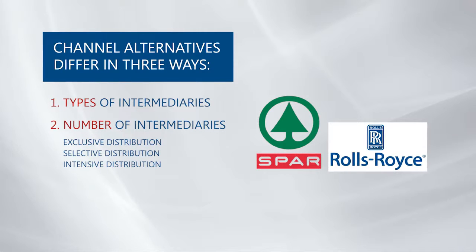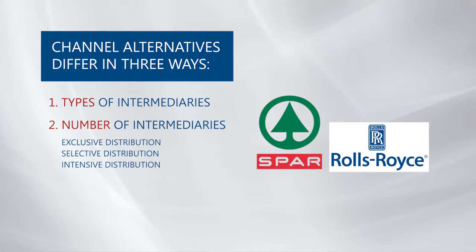And we have a third type in the middle, which is selective distribution, where you have more than one intermediary but fewer than all that would be willing to carry your product. Examples here include the distribution of TVs, furniture, or home appliances.